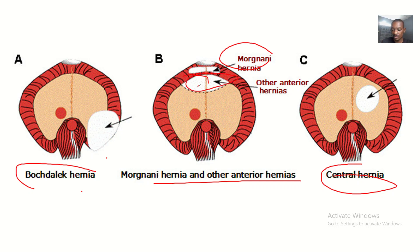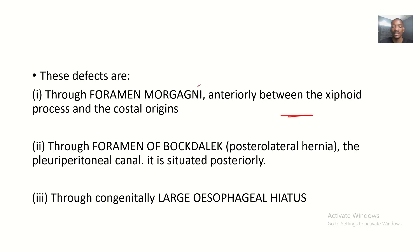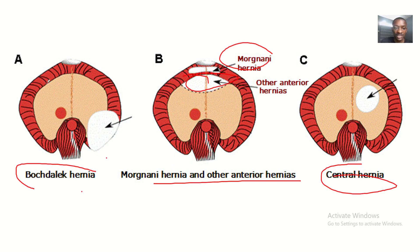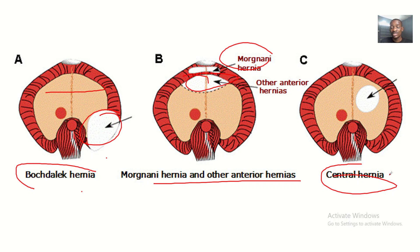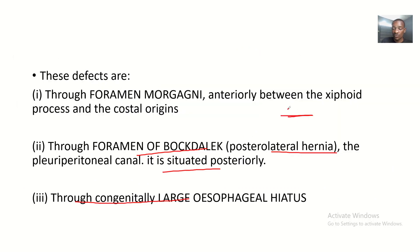A defect can also occur through the foramen of Bochdalek, situated posteriorly. This is a posterolateral hernia — through the foramen of Bochdalek is a posterolateral hernia. There is also the congenital large esophageal hernia, which can be described as the central hernia — through any large esophageal opening.